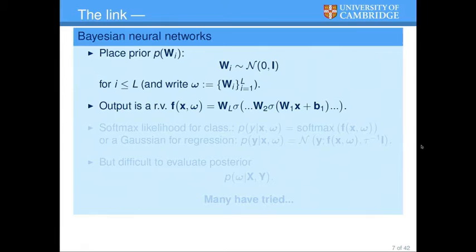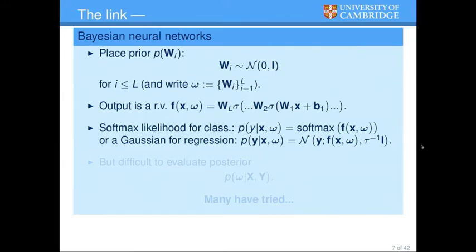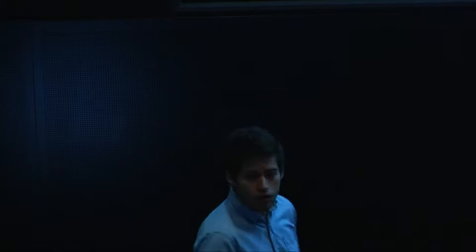If the W's are random variables, the model output is also random, which means we can define our likelihood. For classification, we squash the output through a softmax — a function that takes a vector of scalars and produces a probability vector whose elements sum to one. For regression it's much easier: you just couple the network output with some observation noise by passing it as the mean of a normal distribution.